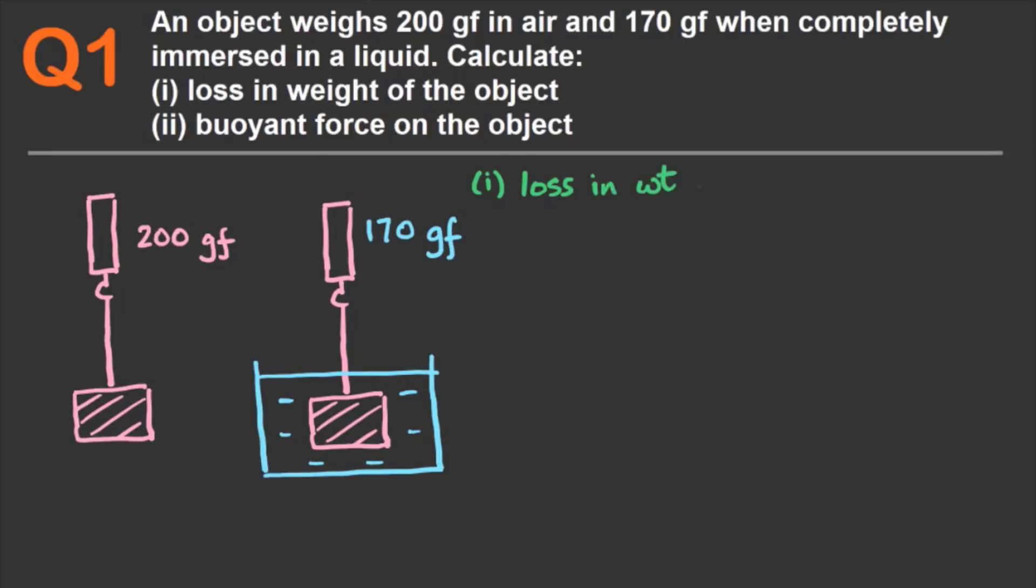As we saw in the video, the loss in weight is the real weight minus the apparent weight. The real weight is the weight in air, so it's 200 gram force, and the apparent weight is the weight in the liquid, that's 170 gram force. And if we subtract the two, we get the loss in weight as 30 gram force.